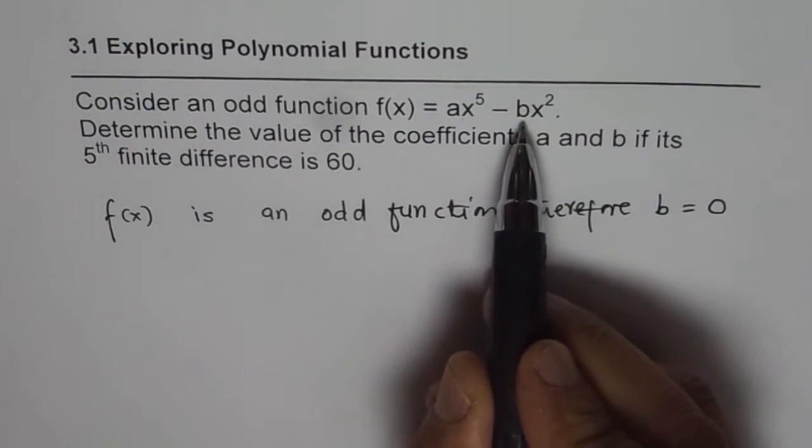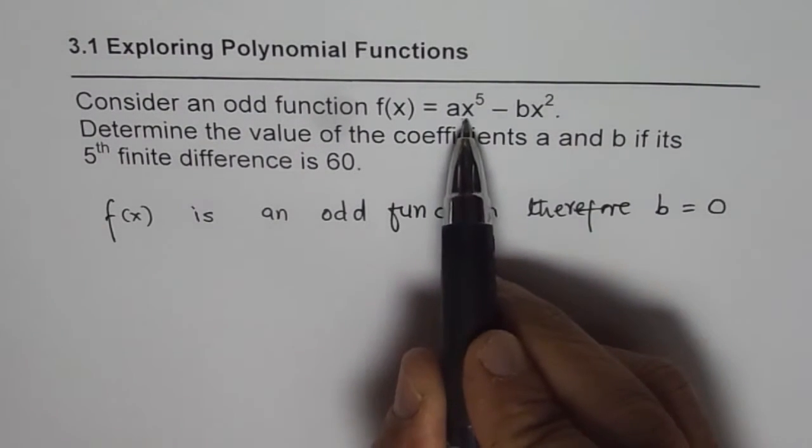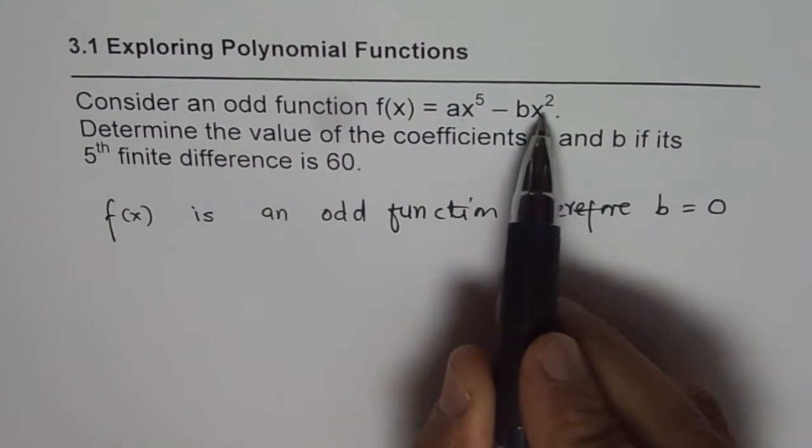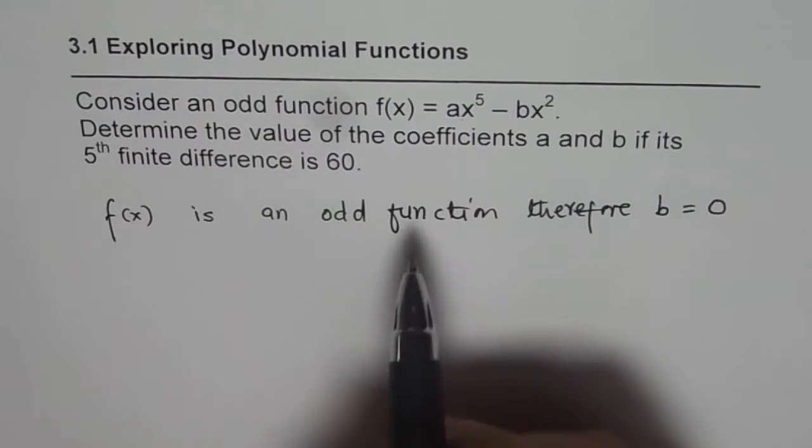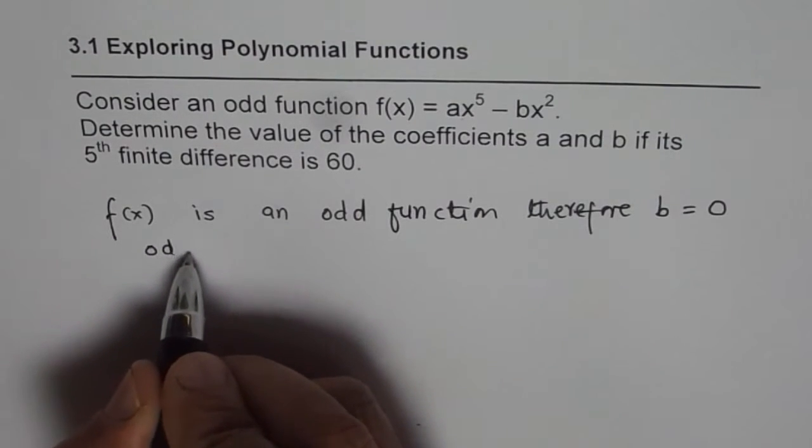If b has any other value, then this function will not be an odd function. So f(-x) will not be -f(x). You remember what is odd function.